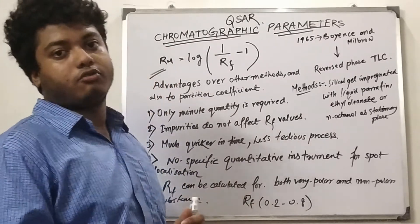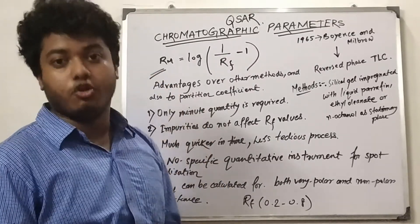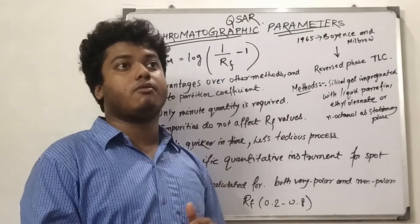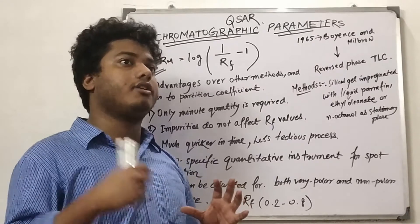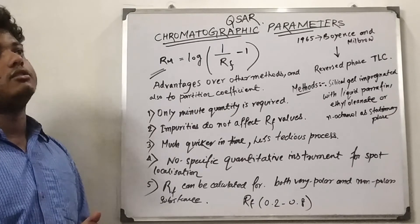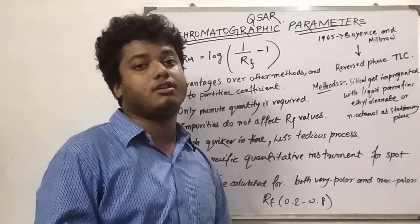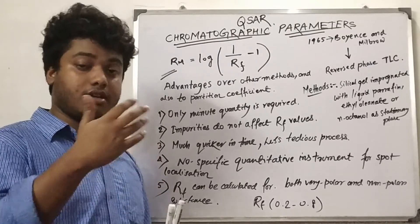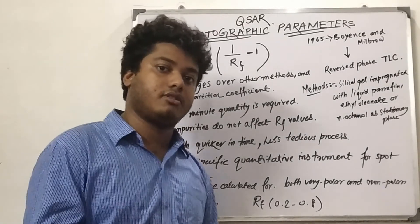We will also discuss the molar refractive index, the capacity factor, and various other methods for determining lipophilic parameters. In summary, we have covered the advantages and disadvantages of using chromatographic parameters for lipophilicity determination. These additional topics and methods will be covered in the next lecture. Thank you.